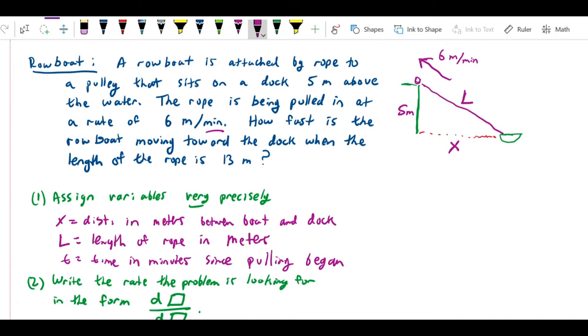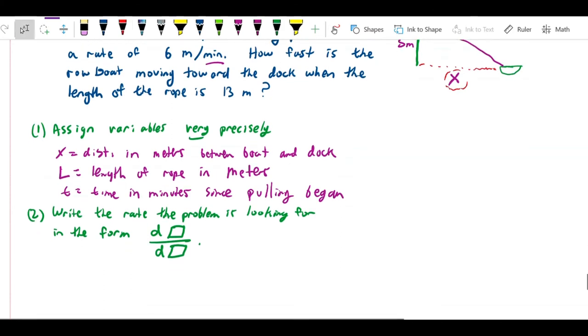So in these terms, what is the problem looking for? It's looking for the rate at which the boat is moving. In other words, what we want to know is how fast is this distance changing with respect to time. So the problem is looking for dx/dt.